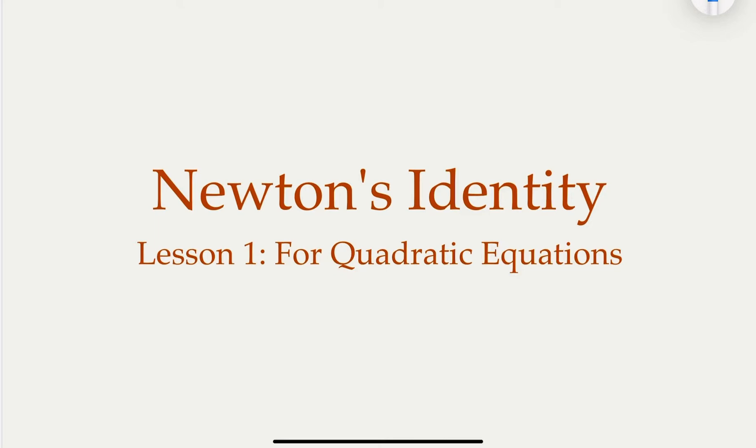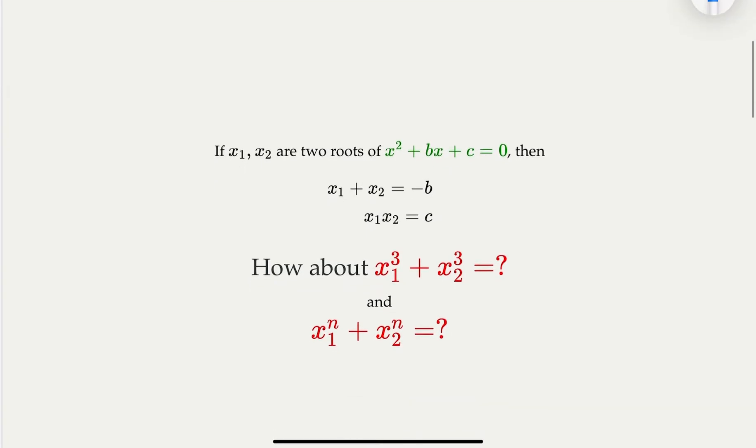Let's start with lesson one for quadratic equations — Newton's identity. In the previous lesson we looked at the sum and the product of the roots of quadratics and how they relate to the quadratic equation coefficients. Today we're going to answer the question: given the two roots x1 and x2 of a quadratic equation, what is the sum of their higher powers — for example, x1³ + x2³, or in general the nth power? Newton figured out that we don't have to solve for the roots; we can answer the question simply from the coefficients of the polynomial.